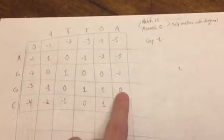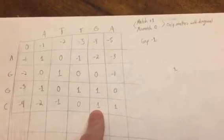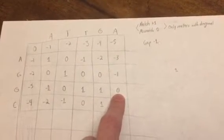Now, what if we introduce a gap? Gaps are negative 1. When introducing a gap, you look at the numbers to the top and the side. If I introduce a gap here, it's negative 1 plus 0, which makes negative 1. If I introduce a gap on the other side, it's negative 1 plus 1, which is 0.